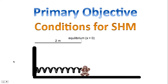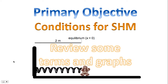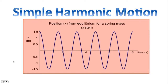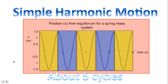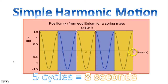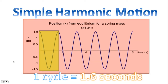Before we look at the conditions for simple harmonic motion, we'll be reviewing some terms and graphs. The position-time graph seen here represents simple harmonic motion — in this case, for the spring-mass system we saw at the beginning of the video. Notice the motion is repetitive. What I've highlighted there represents one cycle. In total, there seems to be just about five cycles of motion, and five cycles of motion is approximately equal to eight seconds, as circled there. So one cycle of motion is approximately 1.6 seconds.